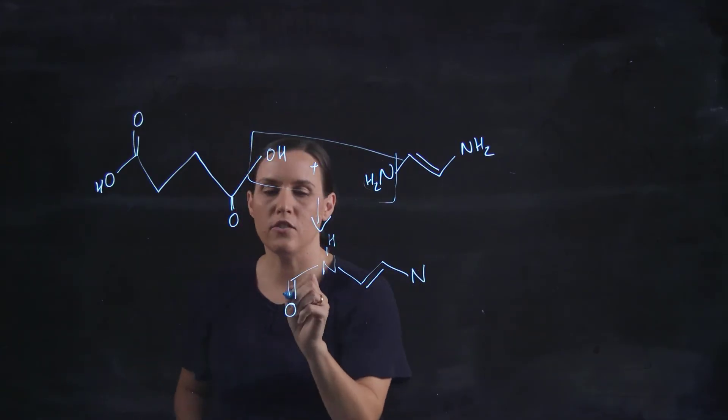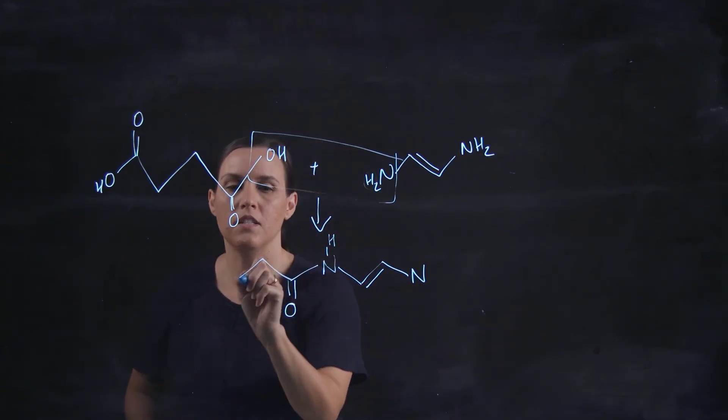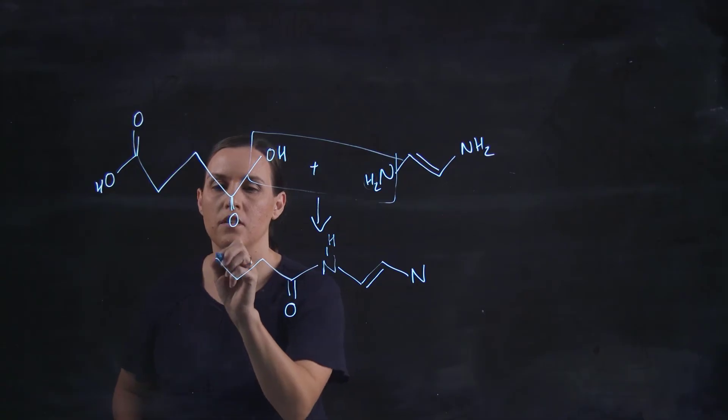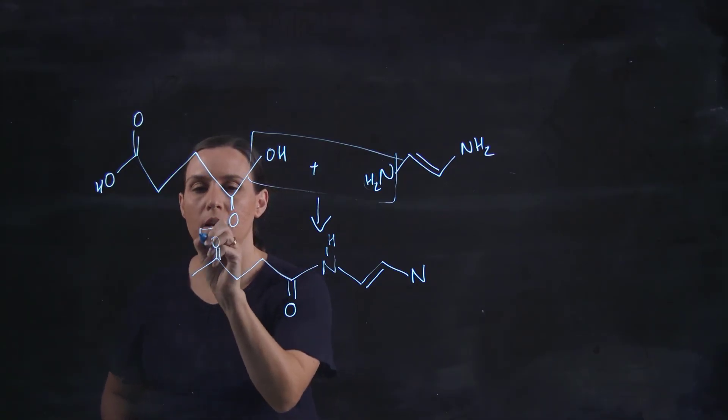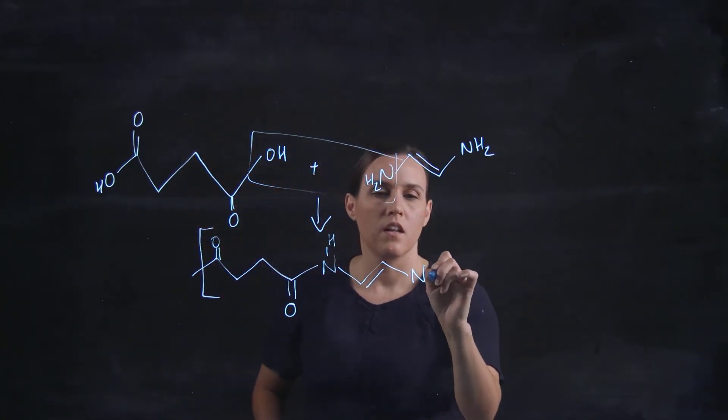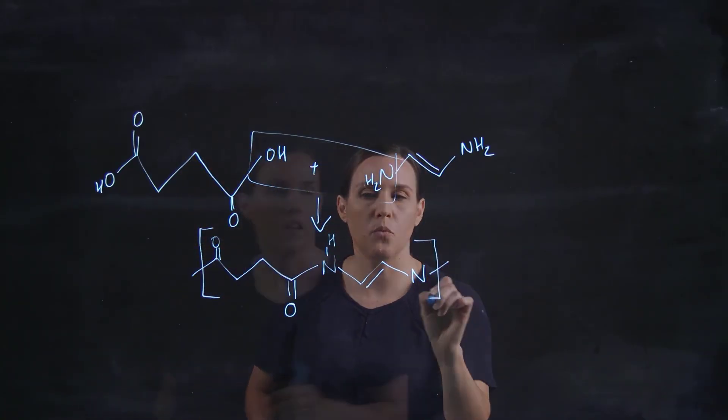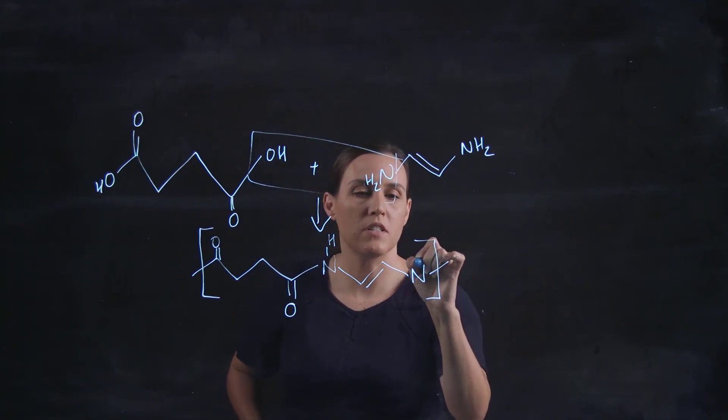So drawing out the remainder of this molecule here, we're going up, down and then up to another carbonyl. And then we would go to the remainder. Now because this forms a polymer, we need to put in where that polymer is going to attach.